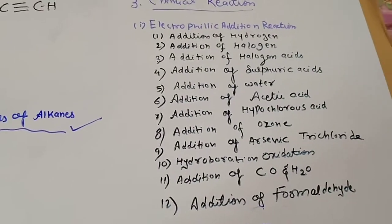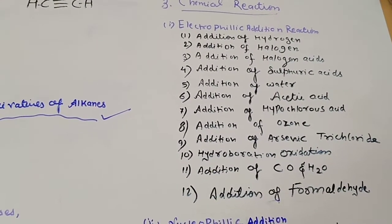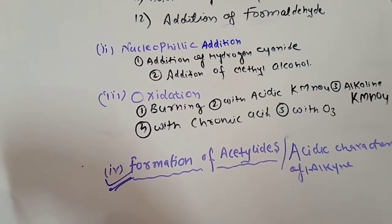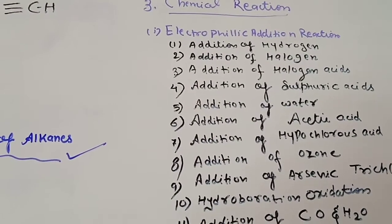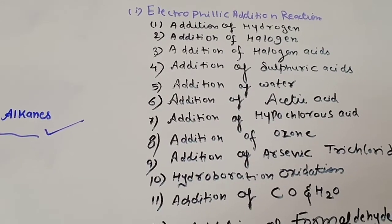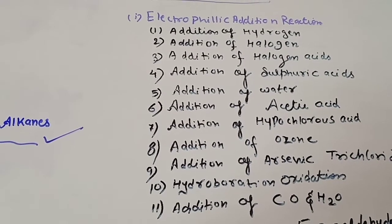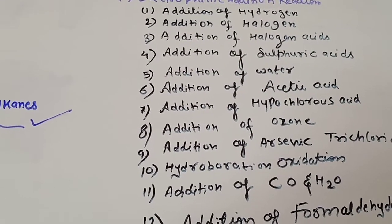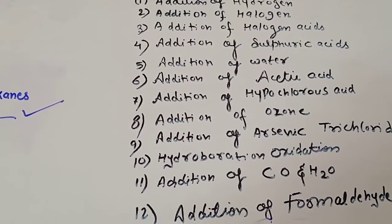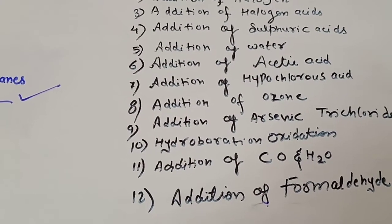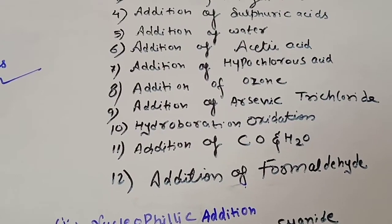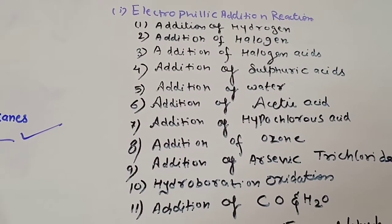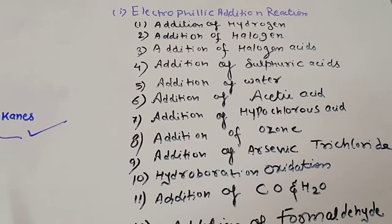The chemical properties of alkynes fall into four categories: first, electrophilic addition reactions; second, nucleophilic addition reactions; third, oxidation; and fourth, formation of acetylides. Electrophilic addition reactions involve the electrophile adding on the triple bond. These include addition of hydrogen, halogens, halogen acids, sulfuric acid, water, acetic acid, hypochlorous acid, ozone, arsenic trichloride, hydroboration, carbon monoxide and water, and formaldehyde. These are not discussed in detail in the syllabus.